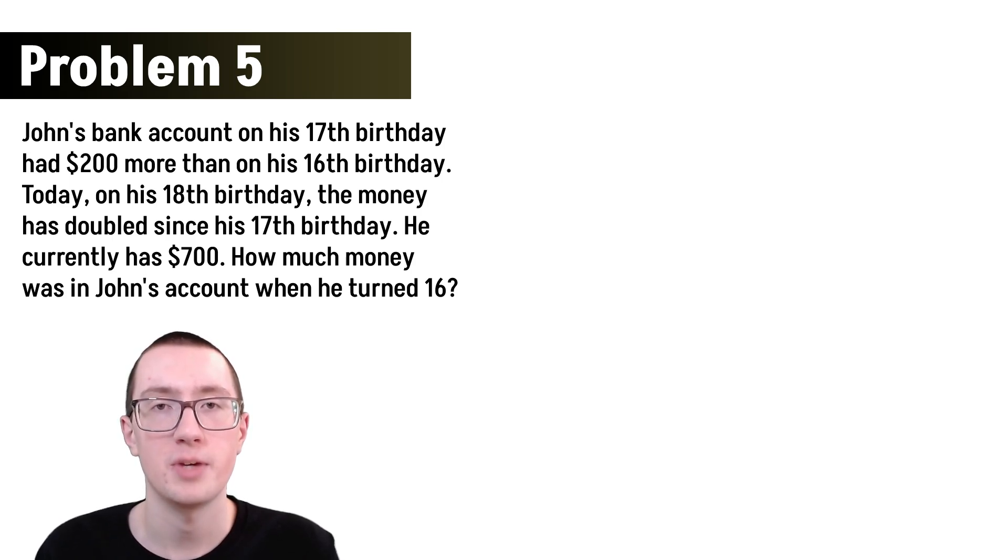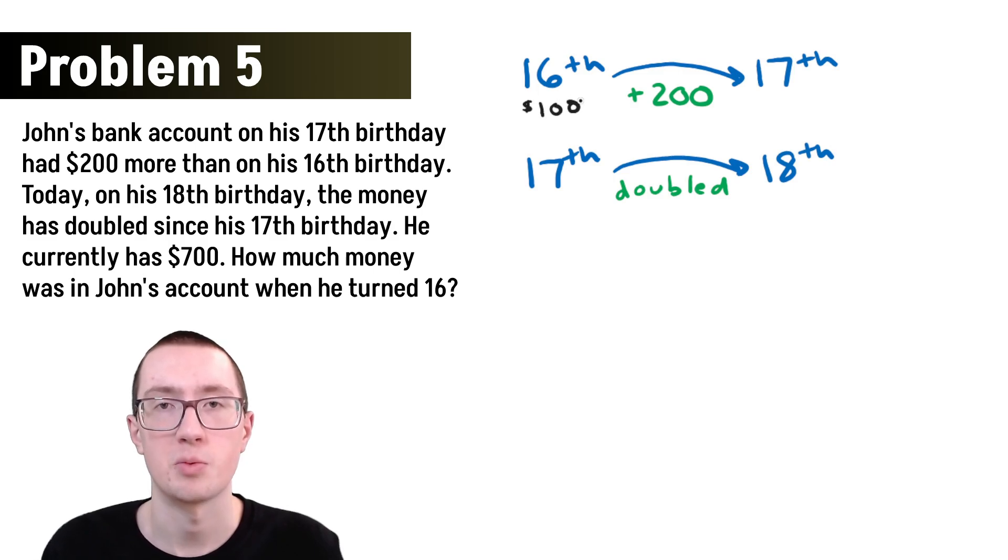Now enough of the geometry. Here's one more final practice problem. And this is going to be sort of algebra, but really it's just going to be logic and working backwards. So we see that John's bank account on his 17th birthday had $200 more than on his 16th birthday. And we also know that today, which is his 18th birthday, his money is doubled from before. But notice how it doesn't give us his money at the start. It gives us his money at the end. So for example, let's say he had $100 on his 16th birthday. To figure out how much he had at the end, all we need to do is do each of these steps. So on his 17th birthday, he added $200, so now he has $300. And then from the 17th birthday to his 18th birthday, it doubled. So it doubles from $300 to $600. And our final answer would be $600.